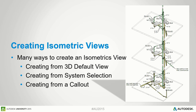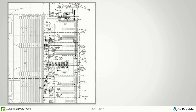The one we see most is creating ISOs from callouts. What it allows us to do is create ISOs that are location-specific rather than just system-specific. When areas get very congested, we create a callout on that area on the plan and do an ISO of that callout, which allows us to make a direct reference in our construction documents and sheets from the plan directly to the ISO placed on another sheet.